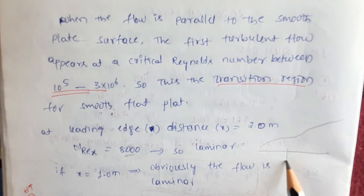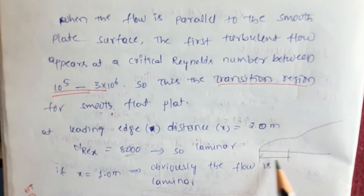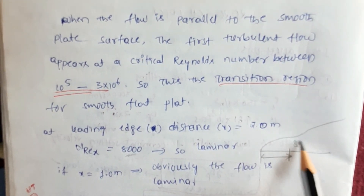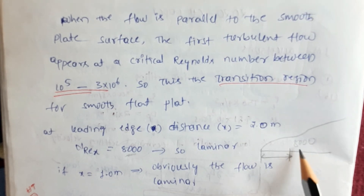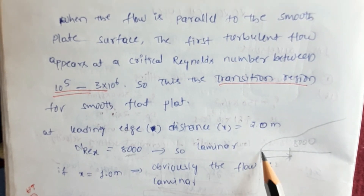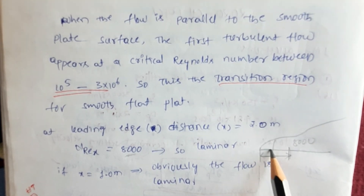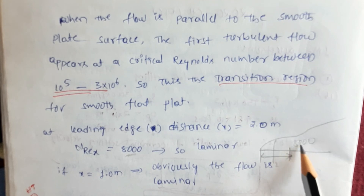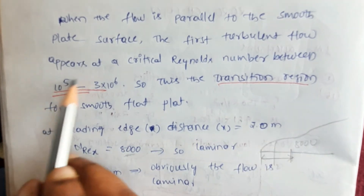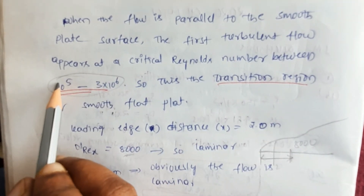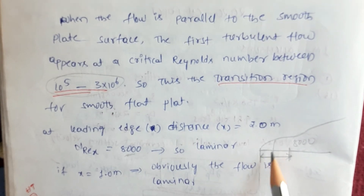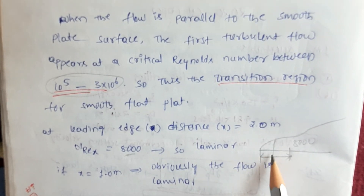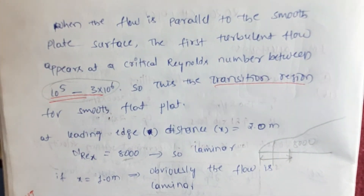Since the Reynolds number at 2 meters from the leading edge is only 8000 — which is far below the critical transition range of 10^5 to 3×10^6 — the flow is clearly laminar at x = 2 m. At x = 1 m, the Reynolds number will be even lower, so the flow is obviously laminar there as well. I hope you have understood the concept and the problem solution. If you like the video, please share and subscribe. Thank you.